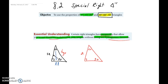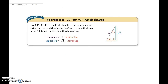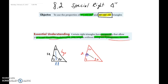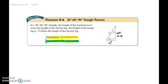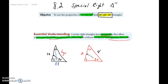Now for the 30-60-90 triangle, the properties that we have — instead of labeling this S and S, I'm going to label this SL for shorter leg. So that means the longer leg will be SL times the square root of 3. The two formulas to remember: our hypotenuse is simply twice our shorter leg. So if this side equals 2, our hypotenuse is 4. And our longer leg is equal to the square root of 3 times our shorter leg, so the longer leg equals 2 times the square root of 3.